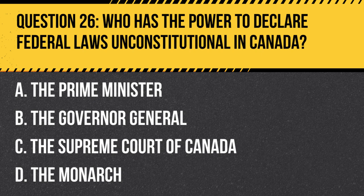Question 26. Who has the power to declare federal laws unconstitutional in Canada? A. The Prime Minister. B. The Governor-General. C. The Supreme Court of Canada. D. The Monarch.